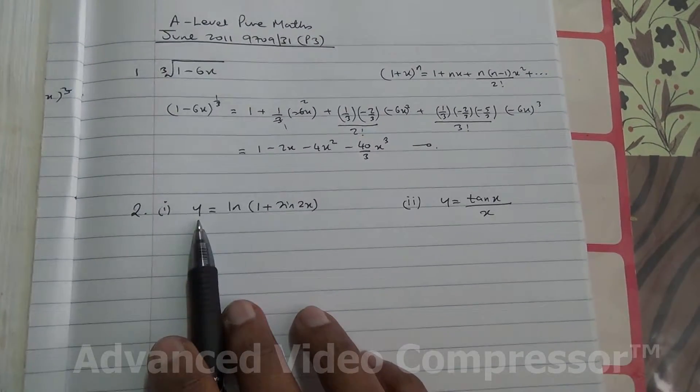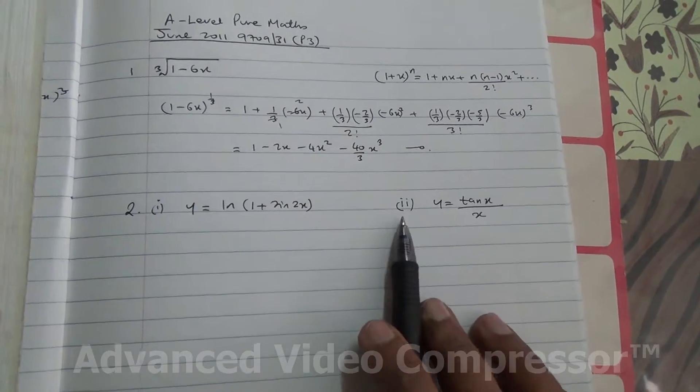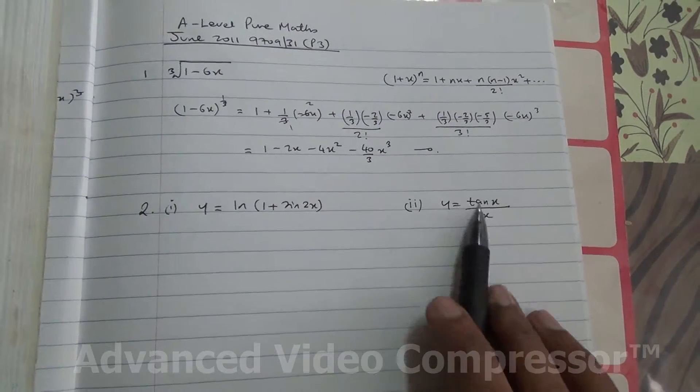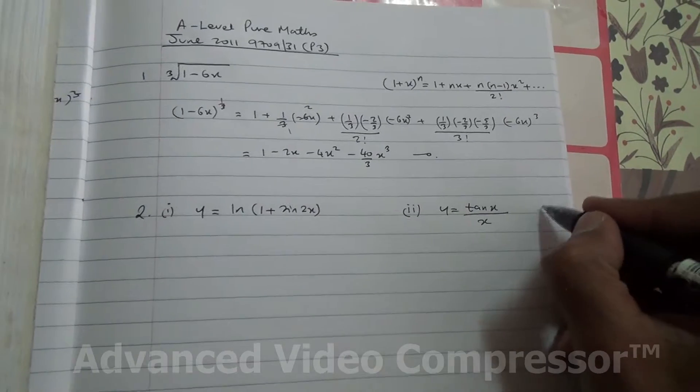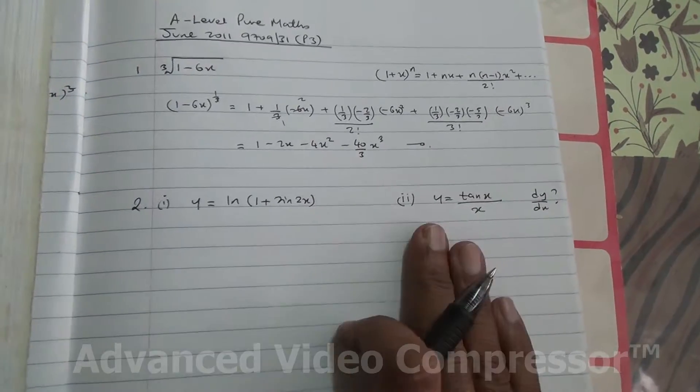Hi, this is question number 2. We have y equals ln of 1 plus sin of 2x, and then for the second part, y equals tan of x over x, and we need to find dy by dx in each of the following cases.